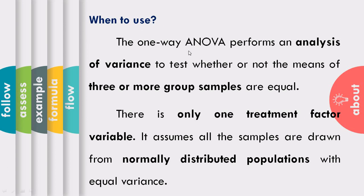Since we are talking about one-way or single factor analysis of variance, we only have one treatment factor. It also assumes that the samples coming from the three or more groups are drawn from a normally distributed population with equal variance.